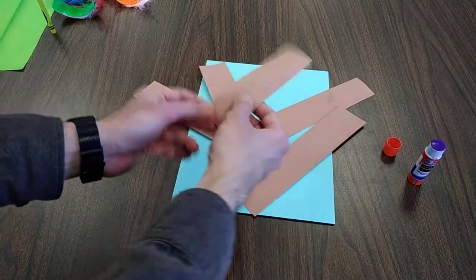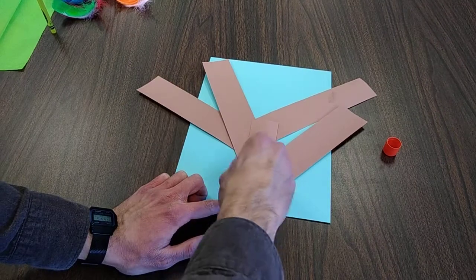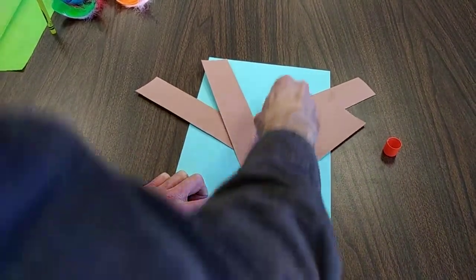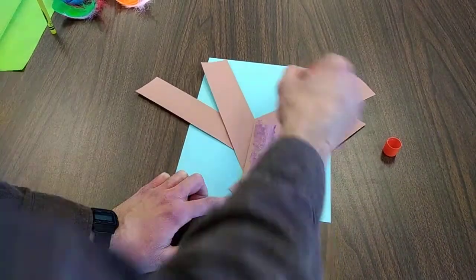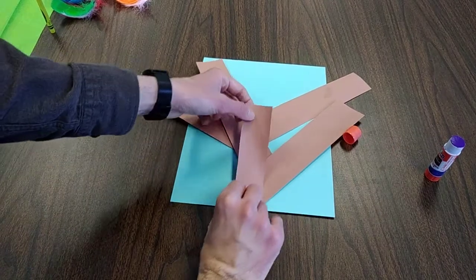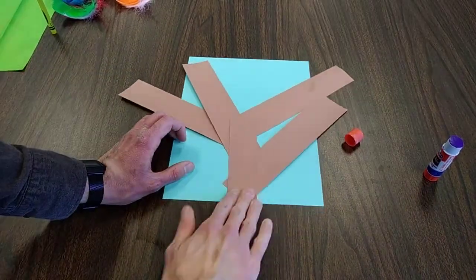So next, I'm going to take the shorter one and apply glue along the whole surface of it. And then just cover up as much of these branches as you can. There you go.